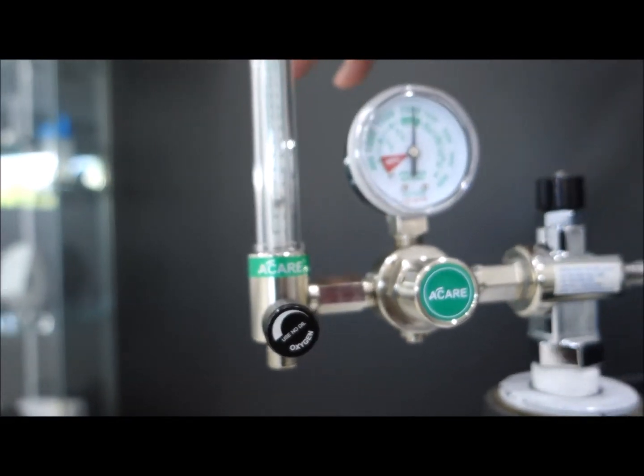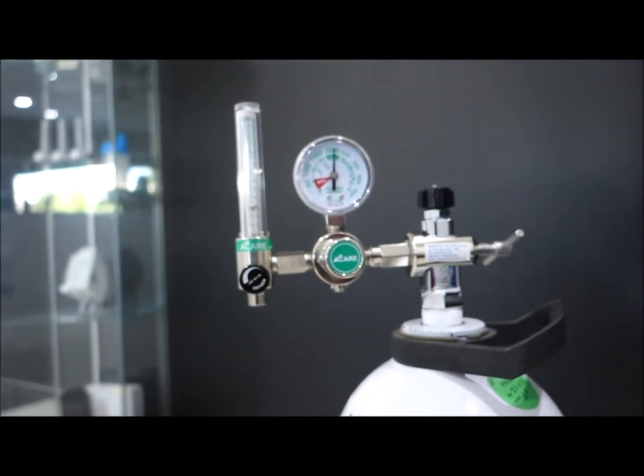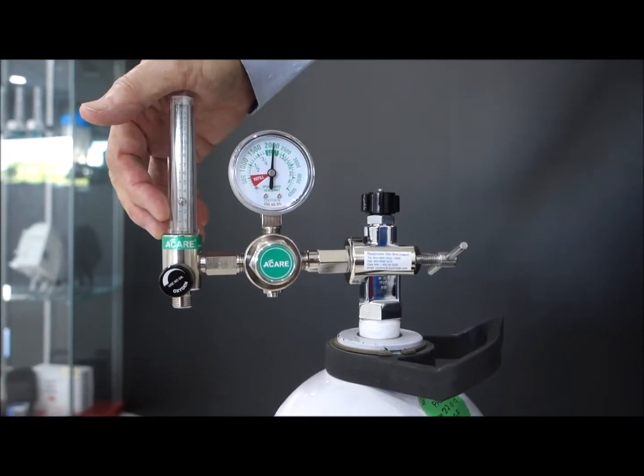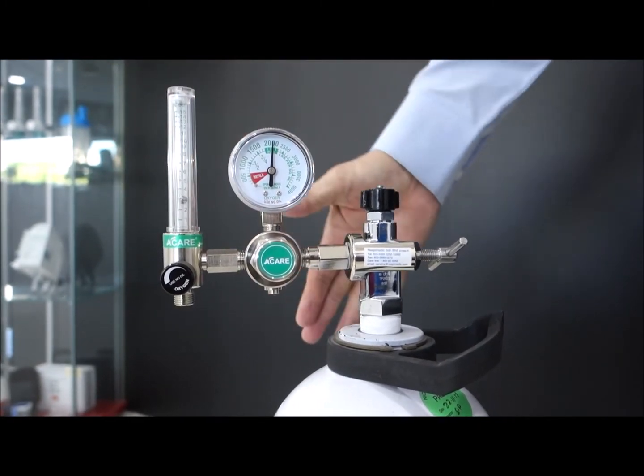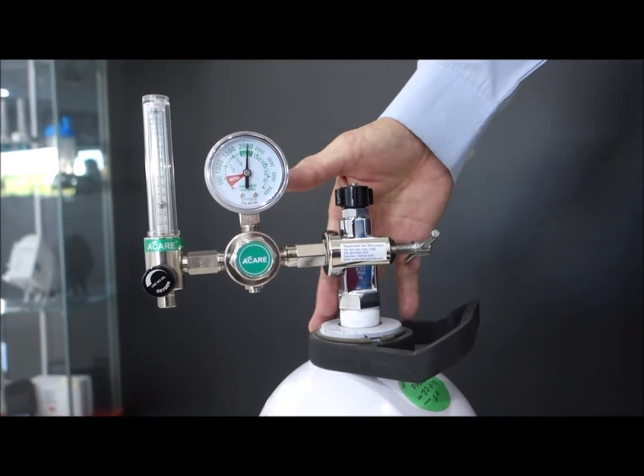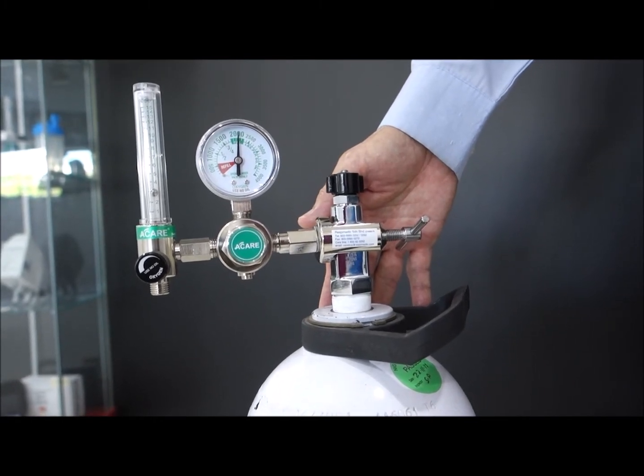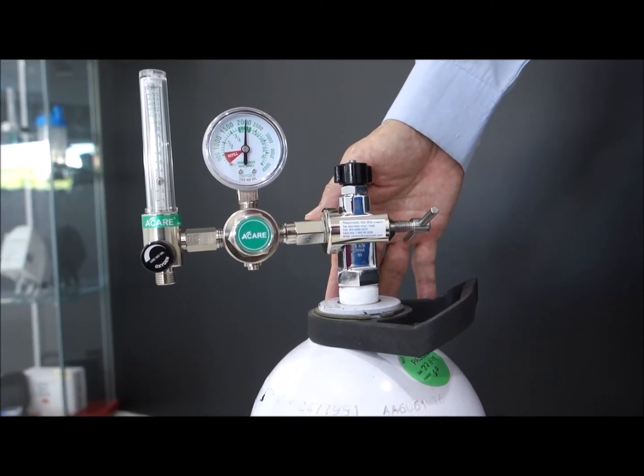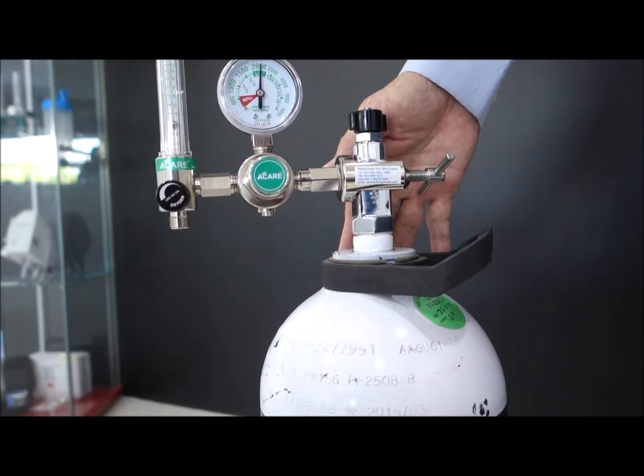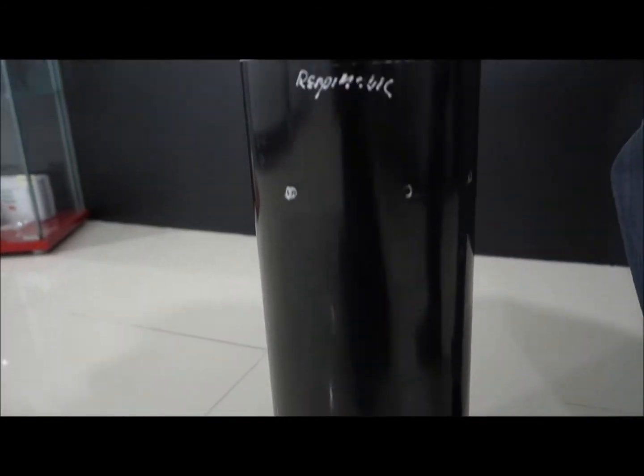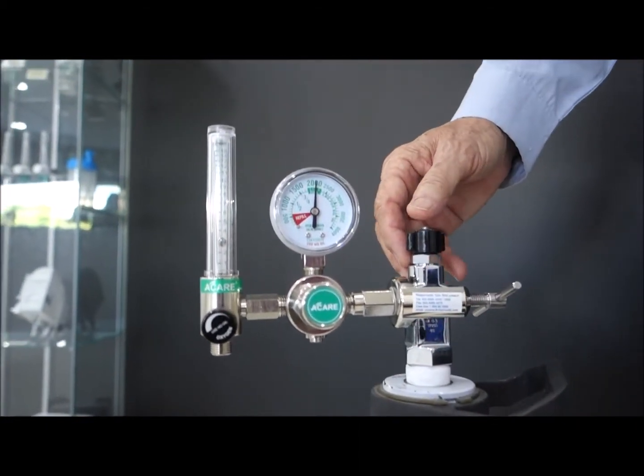Remember, the flow meter is calibrated at liters per minute. Meaning that, if you set at 1 liter, theoretically, you'll be able to draw out from the 1,400 liters capacity, about 1,400 minutes of use. About 1,400 minutes, round about, give or take about 10%, to account for some leakages in the system.